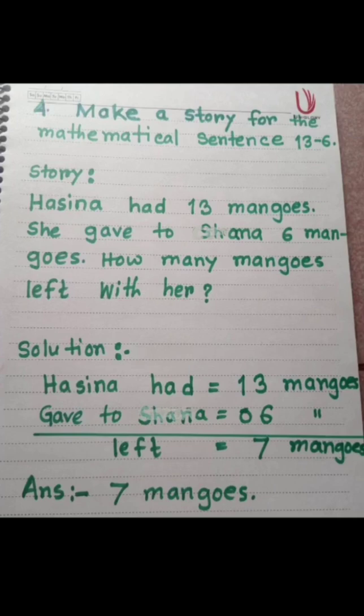Story: Hasina had 13 mangoes. Because 13 minus 6, we take the biggest number first. Hasina had 13 mangoes, she gave to Shana 6 mangoes. How many mangoes are left with her? The mathematical sentence is 13 minus 6.